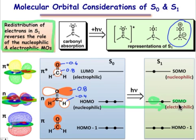And while the π star level was electrophilic in the ground state, it becomes nucleophilic. That singly occupied molecular orbital of the S1 excited state becomes nucleophilic. We'll see more about this in upcoming webcasts.